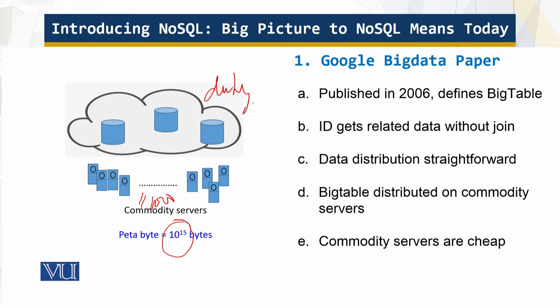We have petabytes of data distributed across thousands of commodity servers. Similar to an RDBMS model at first sight, BigTable stores rows with a single key and stores data in rows within related column families. Therefore, accessing all related data is as easy as retrieving a record by using an ID rather than a complex join.